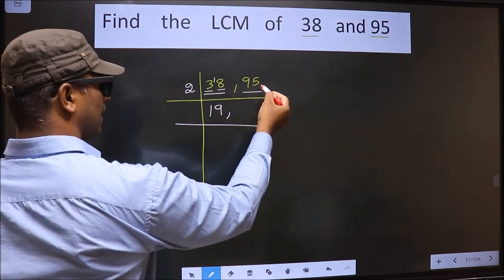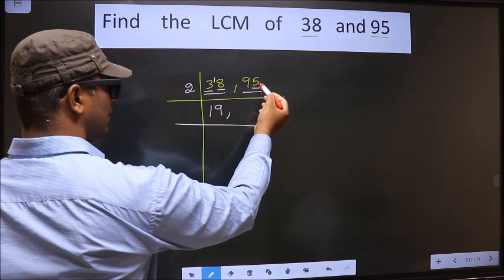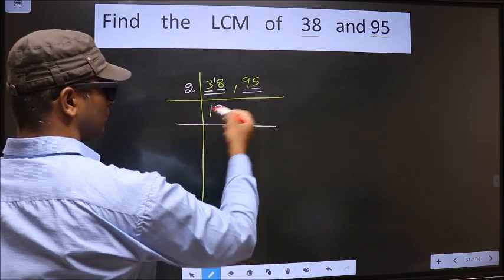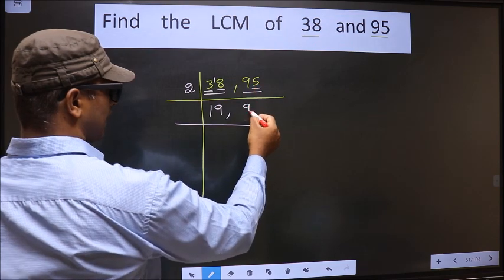Now the other number 95. Last digit 5 not even, so this number is not divisible by 2. So we write it down as it is.